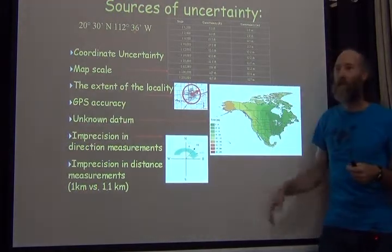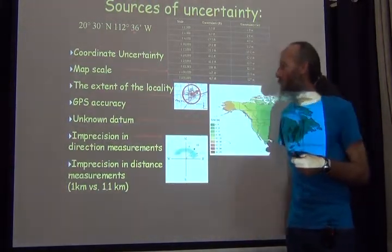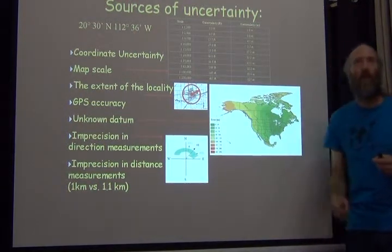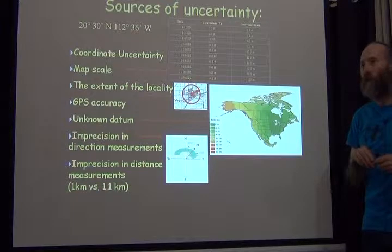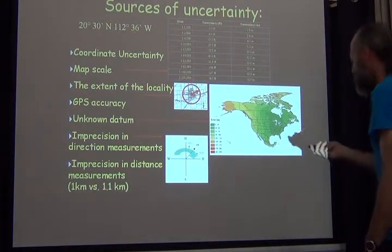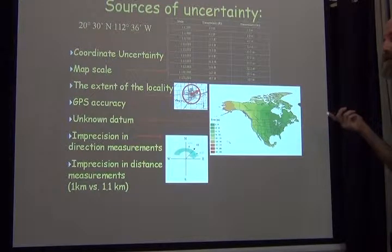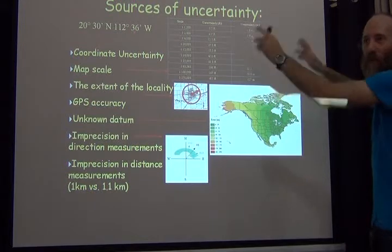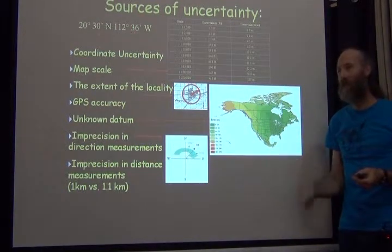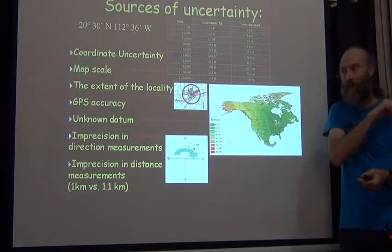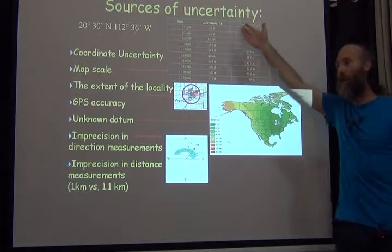Then we get into some details of the process of georeferencing — the actual methods used. The first is imprecision in direction measurements. If I tell you I'm going north from Accra, what does that mean? Does that mean I get my compass and face north and start walking? Probably not. It means it's somewhere north. We don't really know exactly what north means in this case, but a good assumption is that it's not northeast and it's not northwest — or more conservatively, it's not east and it's not west. It's north.